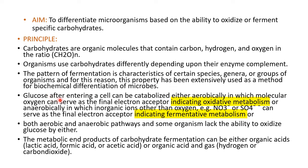Glucose, after entering a cell, can be catabolized either aerobically — meaning it releases energy in which molecular oxygen serves as the final electron acceptor, indicating oxidative metabolism — or anaerobically, in which inorganic ions other than oxygen, like NO₃⁻ or SO₃²⁻, serve as the final electron acceptor, indicating fermentative metabolism, where less energy is released.